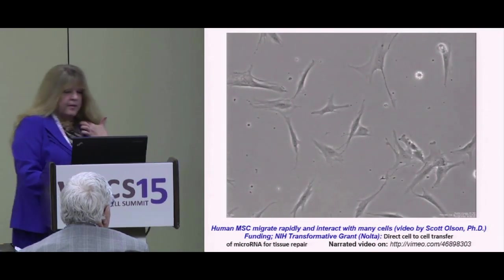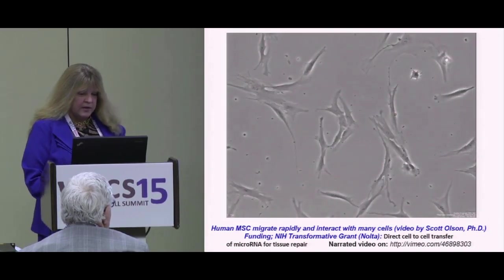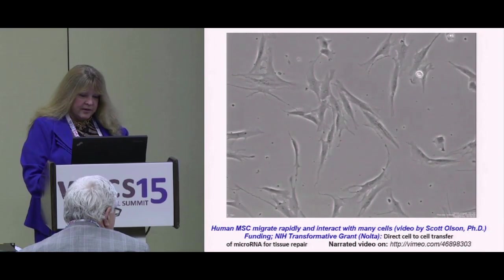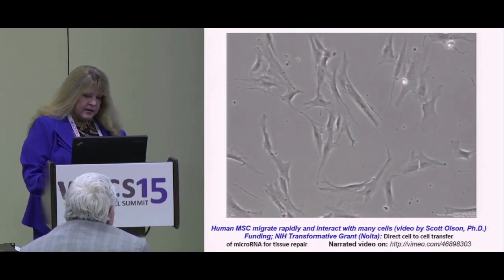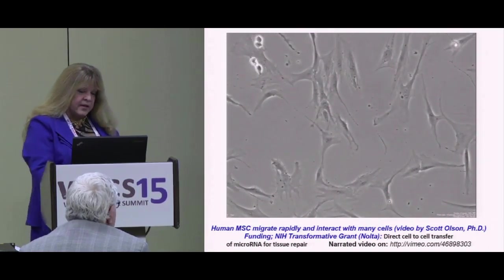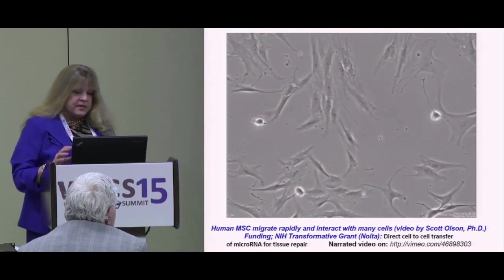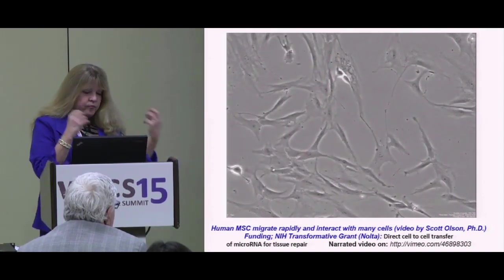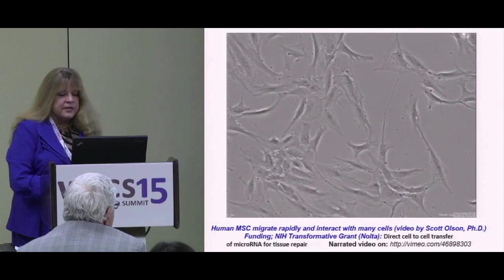These are human MSCs moving around in the dish, communicating with one another. You can see they form a nanotubule here, with little dots — mitochondria — transferring between cells, demonstrating cell-to-cell transfer of organelles. In this area, a cell releases a whole bunch of microparticles that get taken up by another cell. The other cell ingests them, gets extra factors including ATP and mitochondria, then divides and continues. These cells are very good at talking to other cells and transferring things into them.